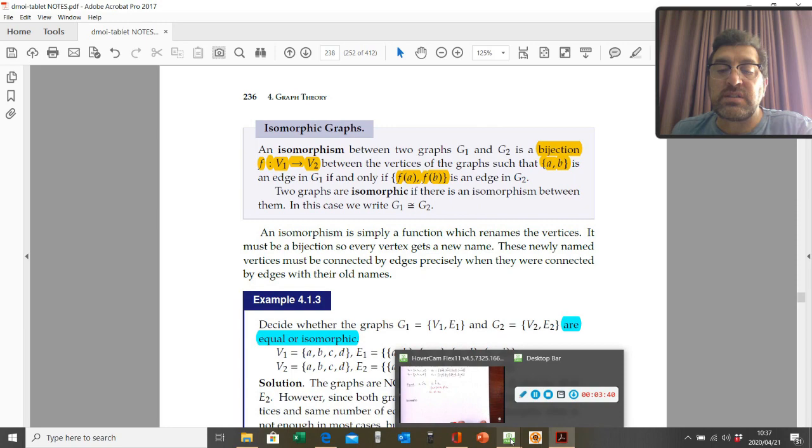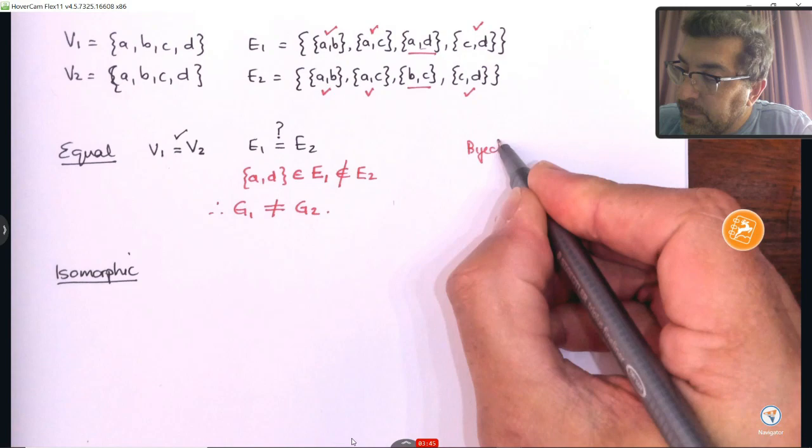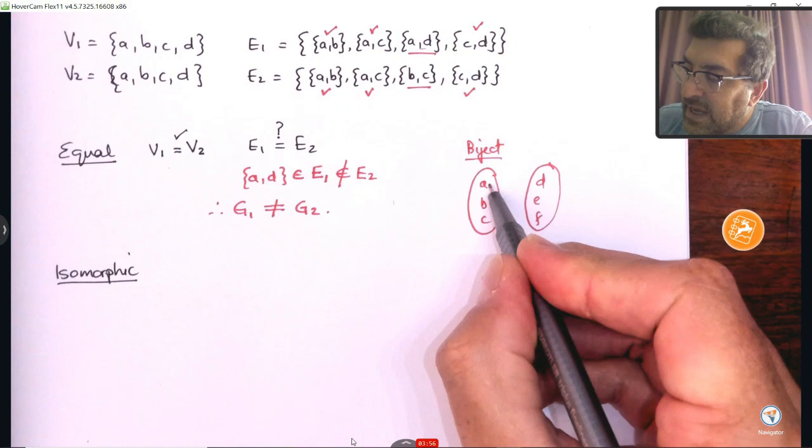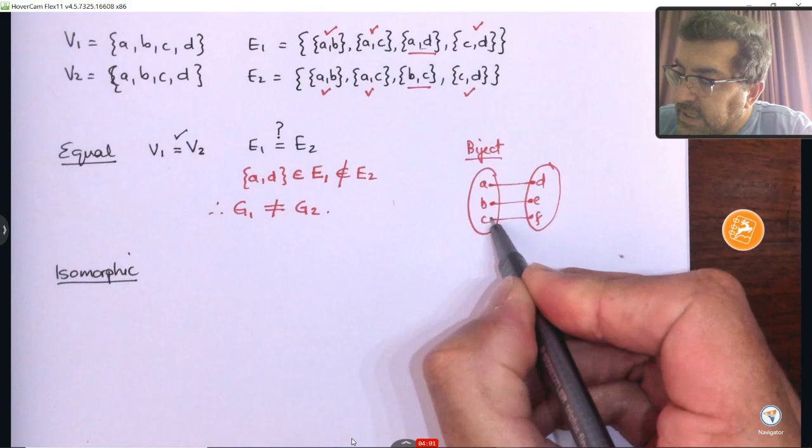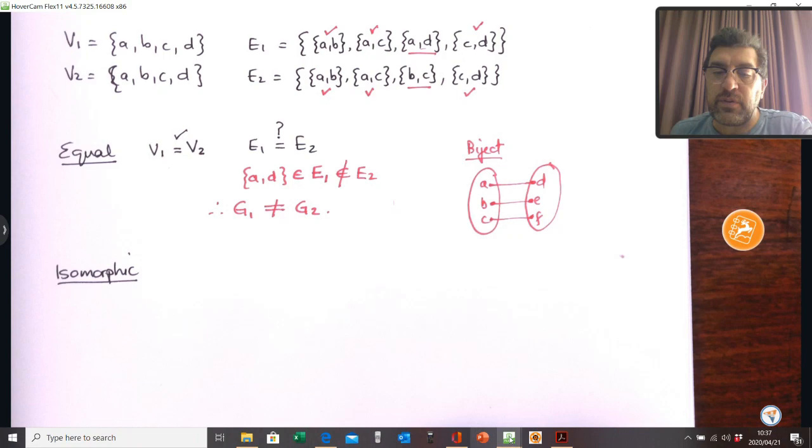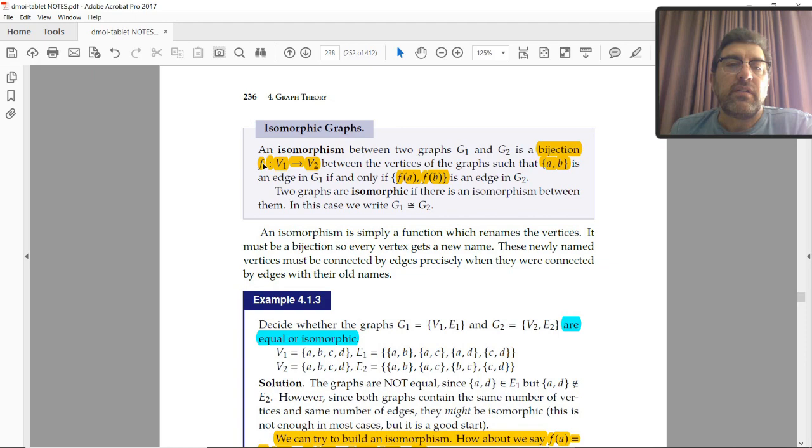Now, a bijection is an important idea. So, just to remind you about a bijection here, if you have a set of vertices, let's just say A, B and C, and you have another set of vertices D, E and F, there's a one-to-one mapping of these vertices. It's a unique mapping. There's no repeats. It's one-to-one. So, that is what we call a bijection here.